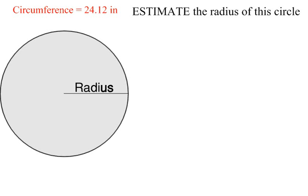Hello, this is Ava Szochowska, and today I will teach you how to estimate the radius of a circle given its circumference. In this example, the circumference is 24.12 inches, and you have to estimate the radius. That means not calculate exactly, but tell me what the radius is close to.